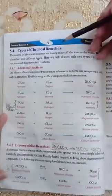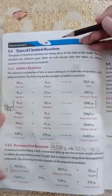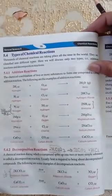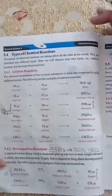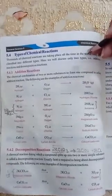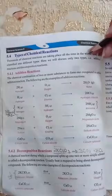Next हमारा topic है types of chemical reactions। आपके thousands of chemical reactions को हम different types में classify कर सकते हैं। इस book में सिर्फ दो किस्म की reactions को discuss किया गया है: पहला है addition reaction और दूसरा है decomposition reaction।